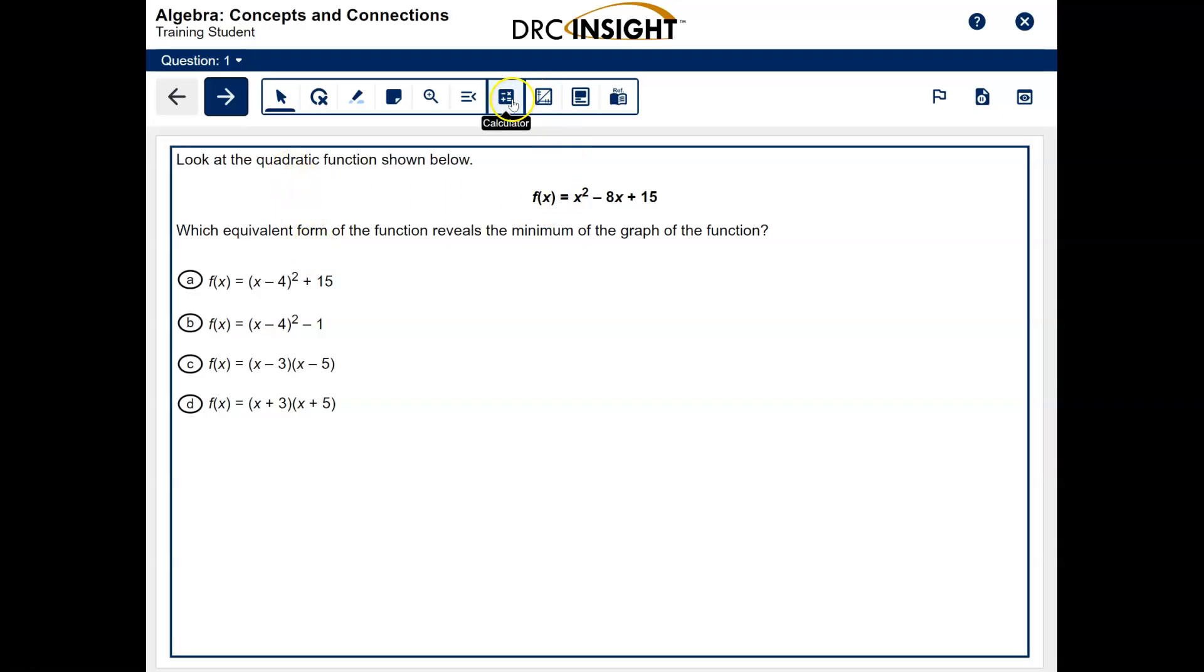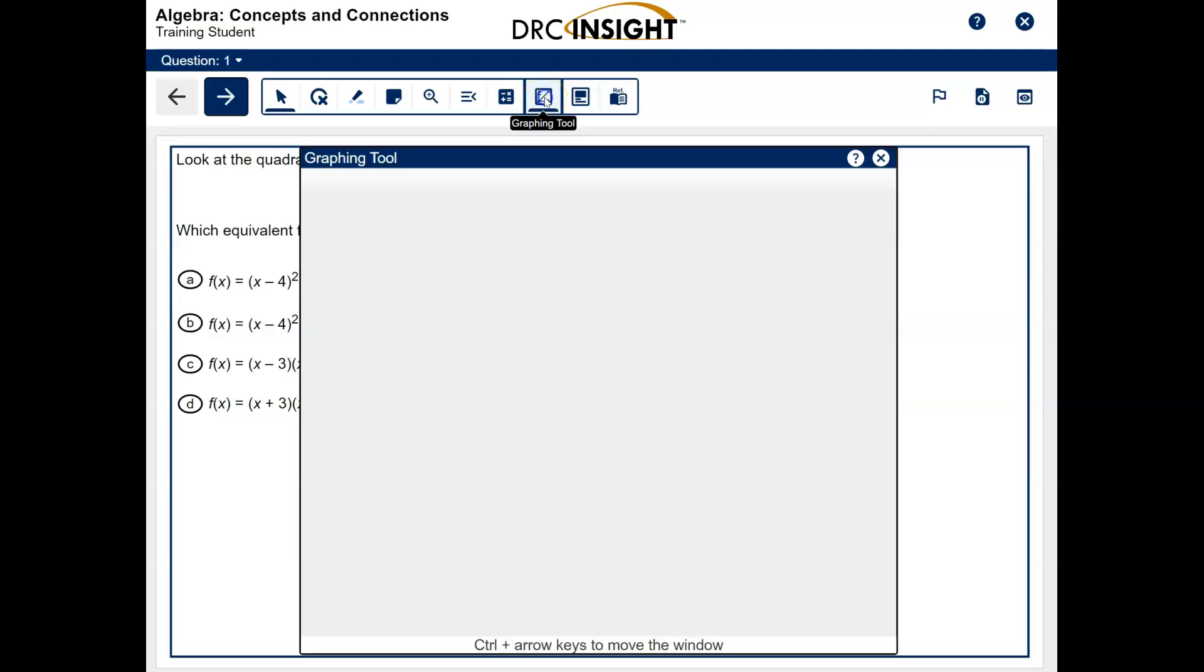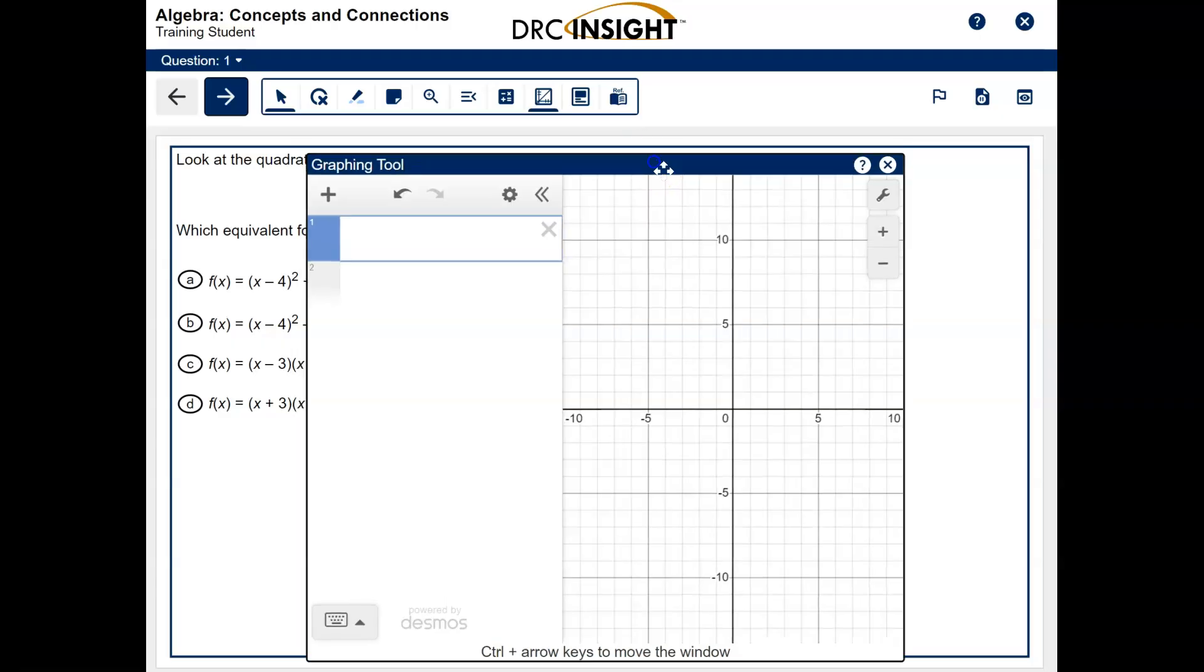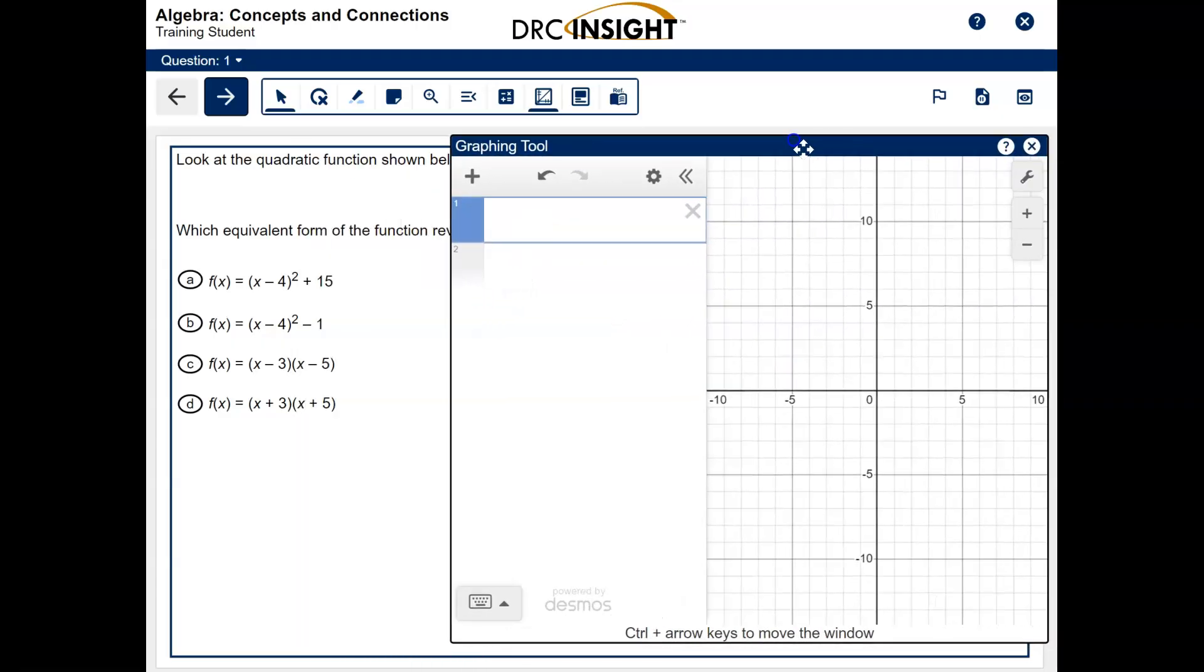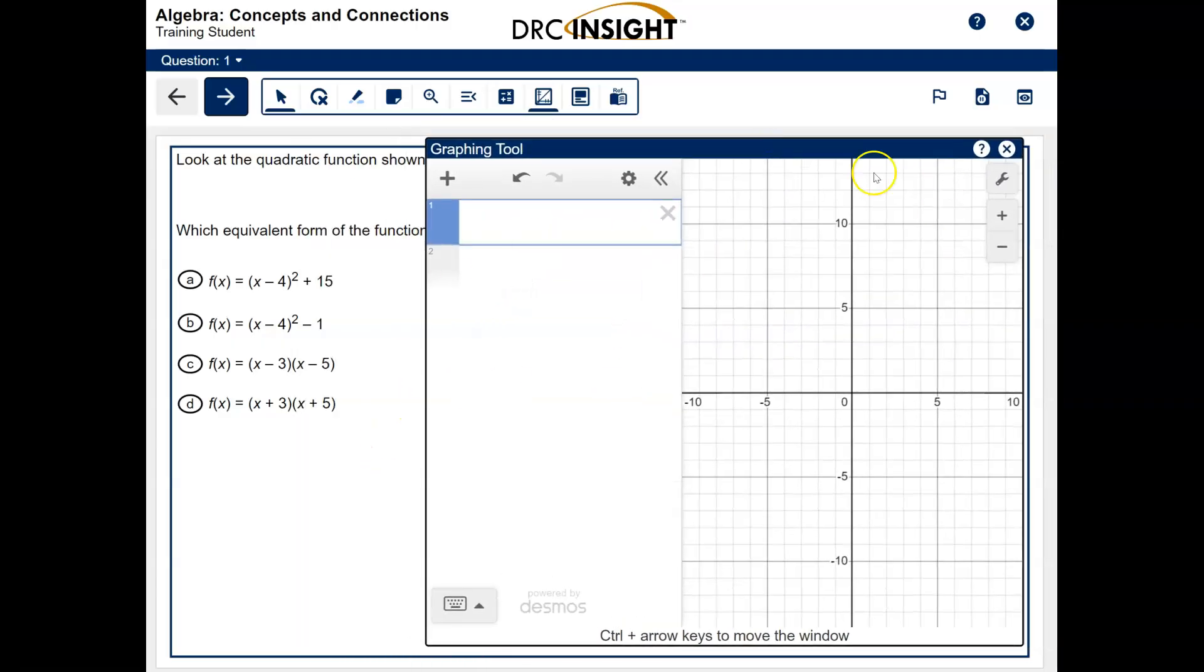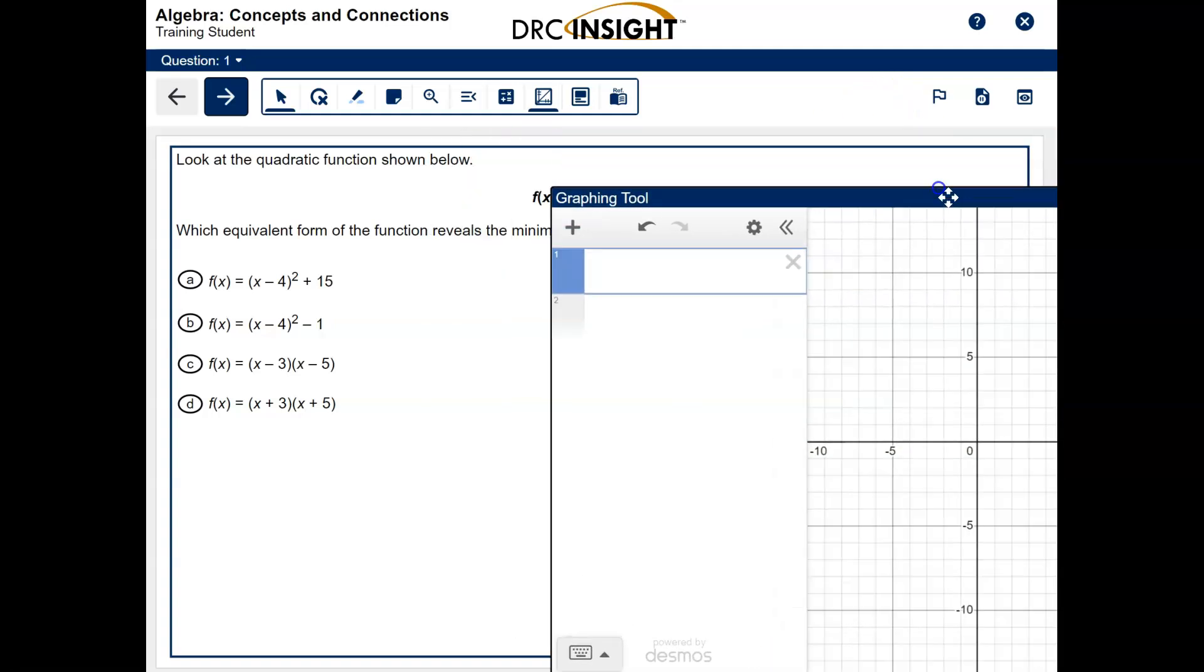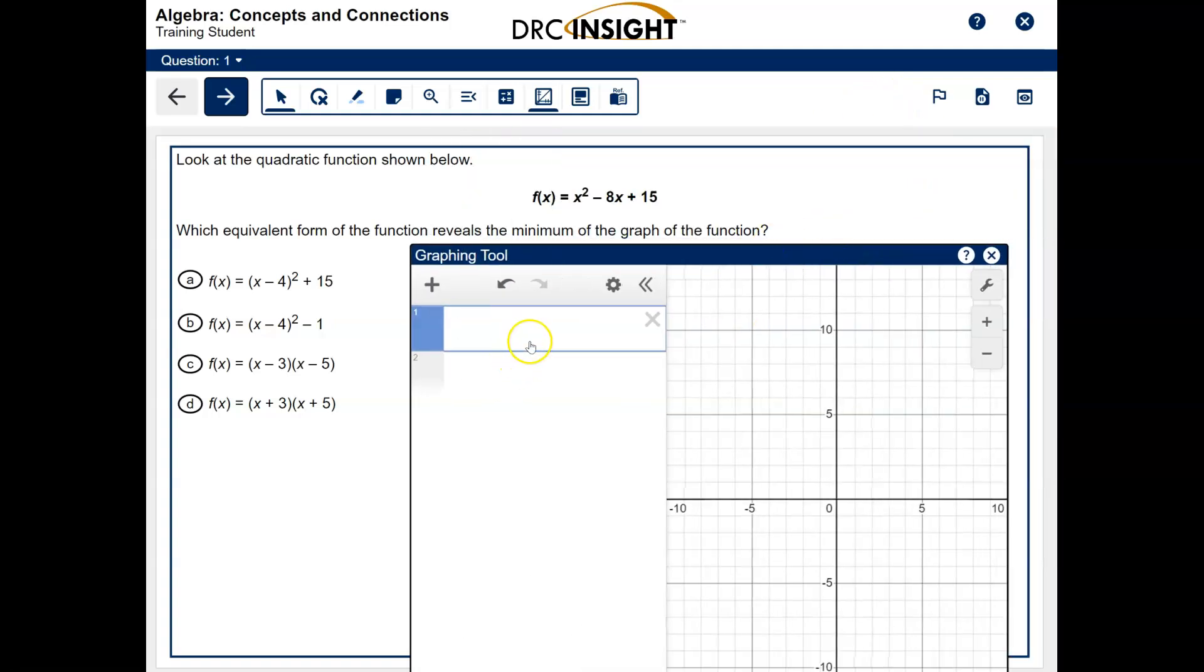First of all, you're going to go up here to the toolbar. You've got to be careful. This first button that says calculator is not the calculator we're going to use today. We're actually using the one that says graphing tool, and that is the official Desmos graphing calculator for the state of Georgia. I'm going to pull this over. Unfortunately, I can't resize it, but we're going to work around that. So step one is to type in the function that you see.